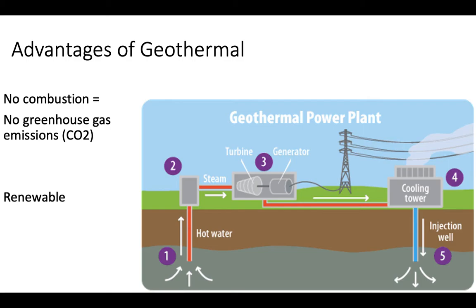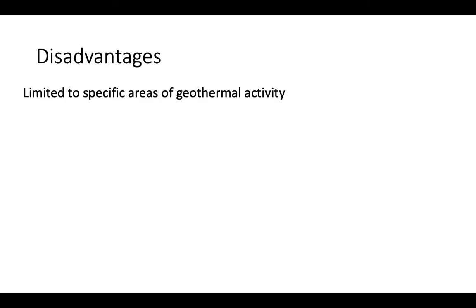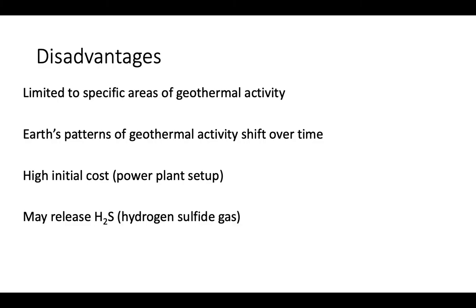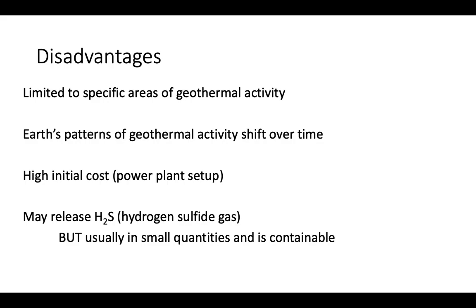The advantages of geothermal: no combustion means no greenhouse gas emissions, and it's totally renewable because it relies on the radioactive decay of Earth's core. The disadvantages are that you can only build a geothermal plant where there's geothermal activity — you can't build one wherever you want. Those patterns will shift over hundreds, thousands, or millions of years, so a plant running today may not be viable a thousand years from now. The initial setup cost is high, and because geothermal isn't as frequently used as coal, the infrastructure isn't as developed, making it a bit more expensive. The process can also release hydrogen sulfide gas, although usually in very small quantities that are easily contained and chemically transformed so they're no longer dangerous.